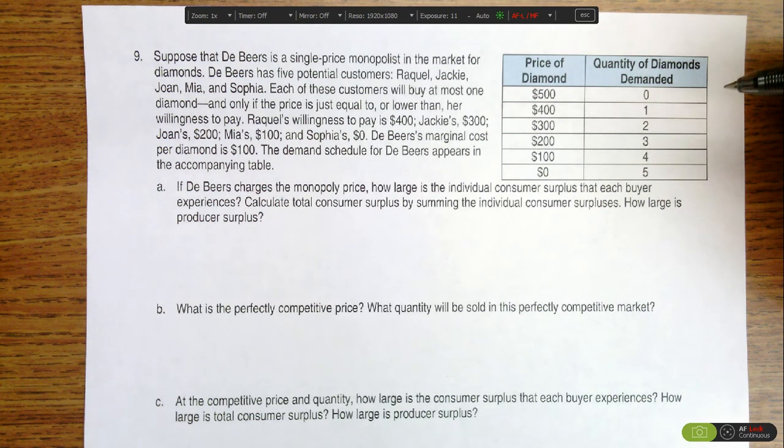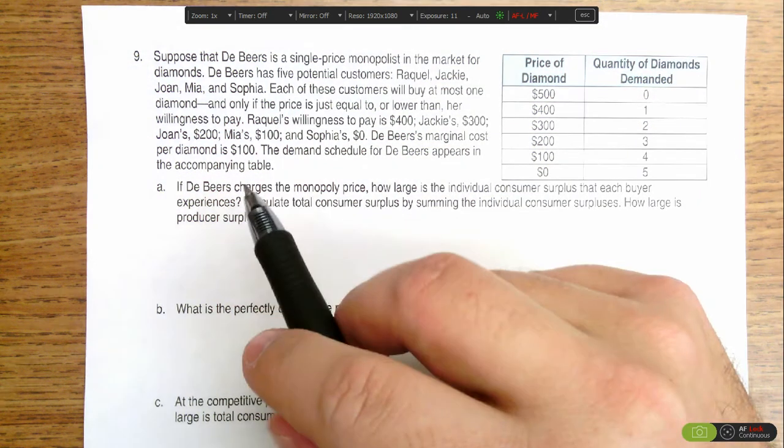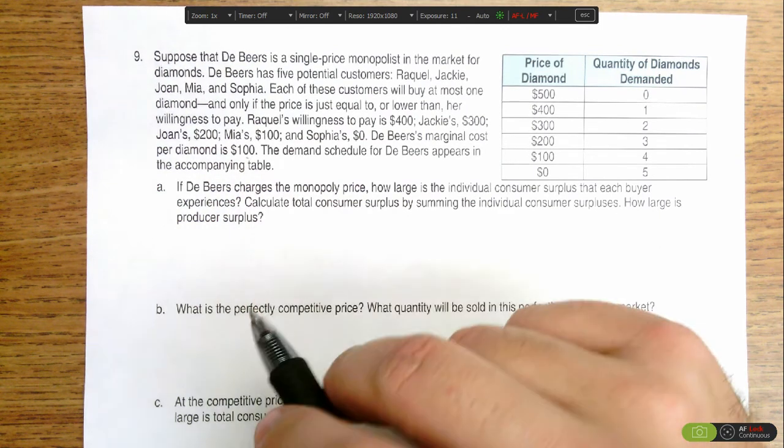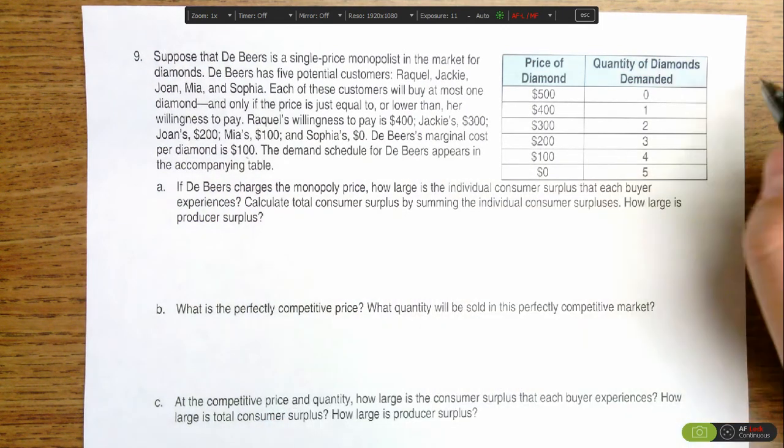So the first step here is to figure out how many diamonds are going to be sold and we know that the optimal output rule tells us that marginal revenue has to equal marginal cost and we know that the marginal cost for a diamond is $100. And so we need to figure out our total revenue and then calculate marginal revenue.